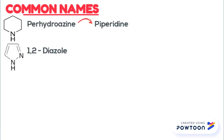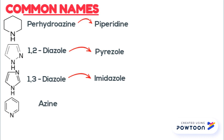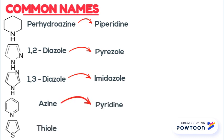Aza plus aine — whose common name is piperidine. Number 2: 1,2-diazole is pyrazole. Then, 1,3-diazole is imidazole. Next, azine is pyridine. And the last one: thiol gives thiophene.